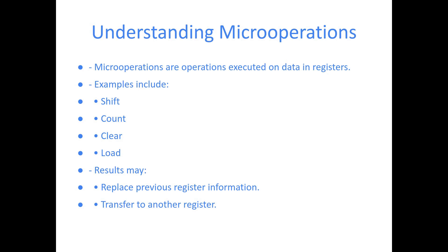Let's break it down. A micro-operation is essentially a small operation executed on data in a register. The result of this operation can do one of two things: replace the previous information in the register, or be transferred to another register. For instance, you can perform a shift, count, or load operation on a register.